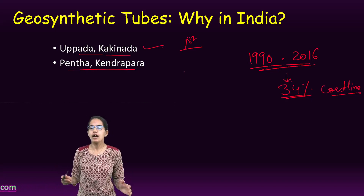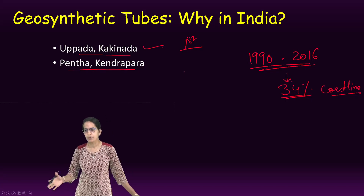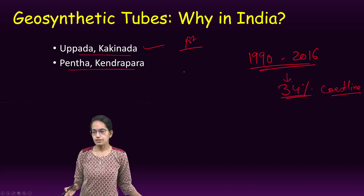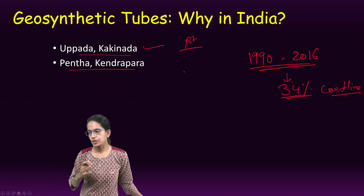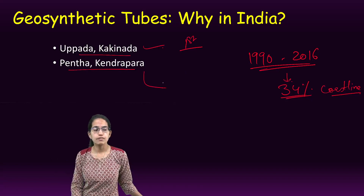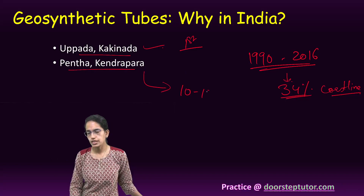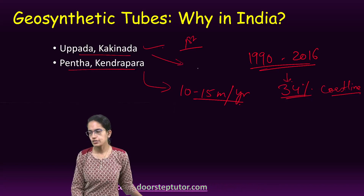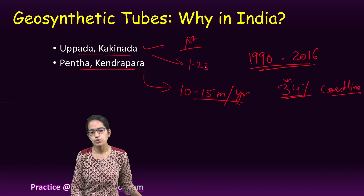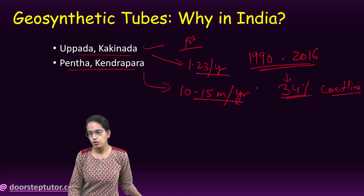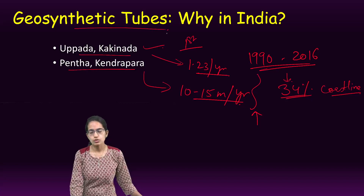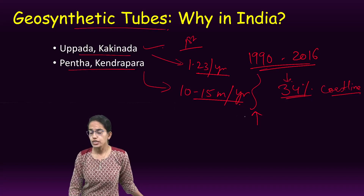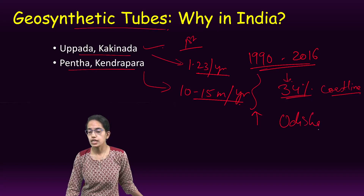Both Upada and Petha have been severely eroded. Petha has an erosion rate of nearly 10 to 15 meters per year, and Upada has an erosion of nearly 1.2 meters per year. Both have used submerged varieties of geosynthetic tubes as one of the mitigation methods. Odisha is also the state hit by the maximum number of cyclones in India.